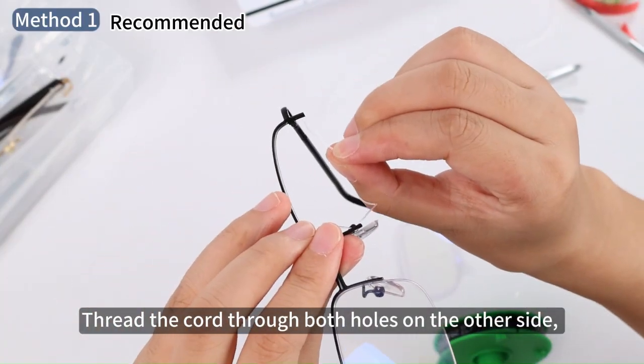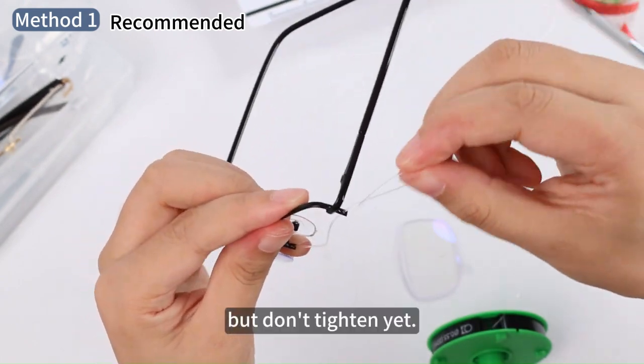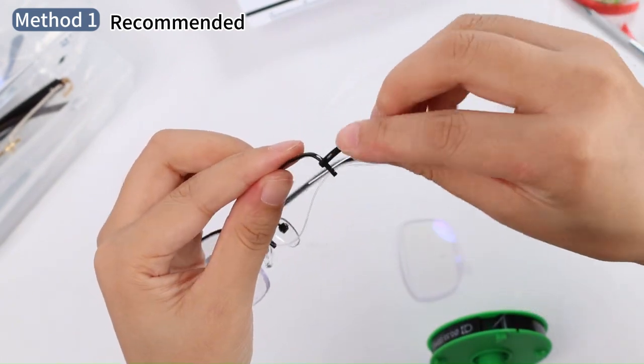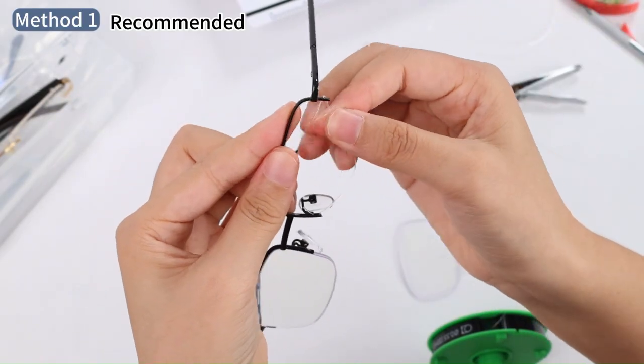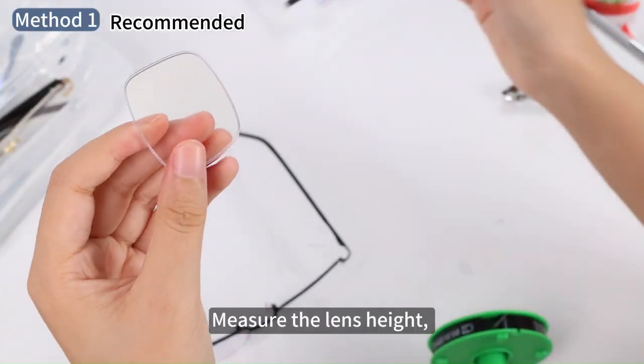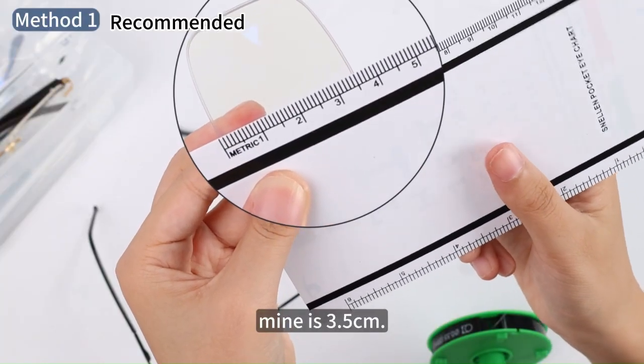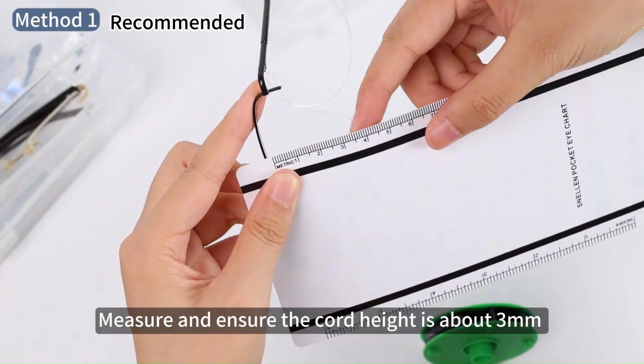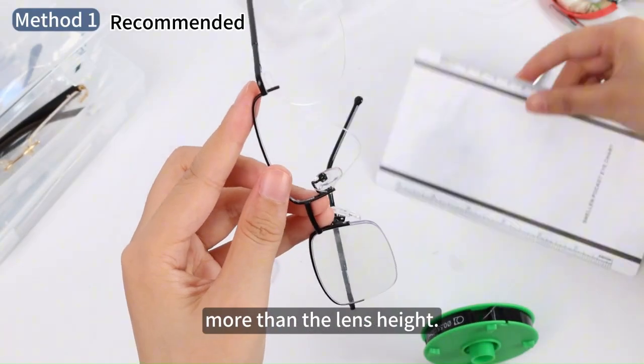Thread the cord through both holes on the other side, but don't tighten yet. Measure the lens height. Mine is 3.5cm. Measure and ensure the cord height is about 3mm more than the lens height.